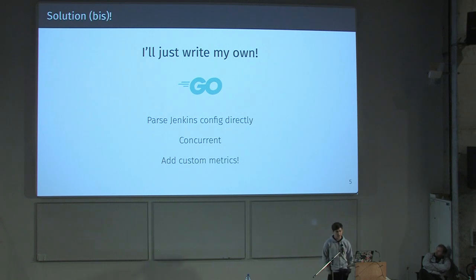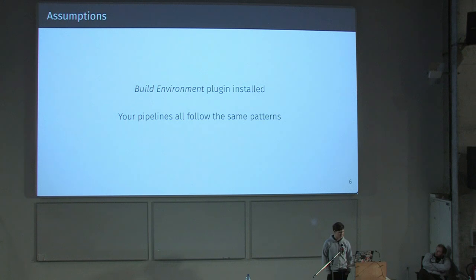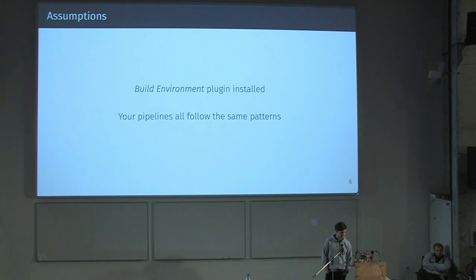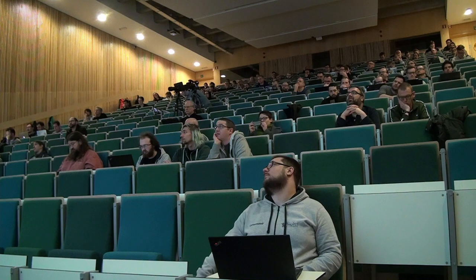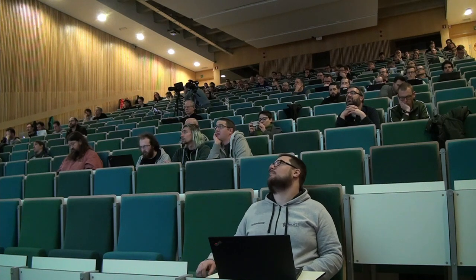I started hacking on it and made some assumptions, like you need the build environment plugin installed because we need some environment variables that are set during the build. Some minor requirements — just the plugin you need to install. I also assume that your pipelines are standardized, meaning the job naming is standard and every pipeline has its own subfolder. It's not strictly necessary, but it will simplify your queries a lot.